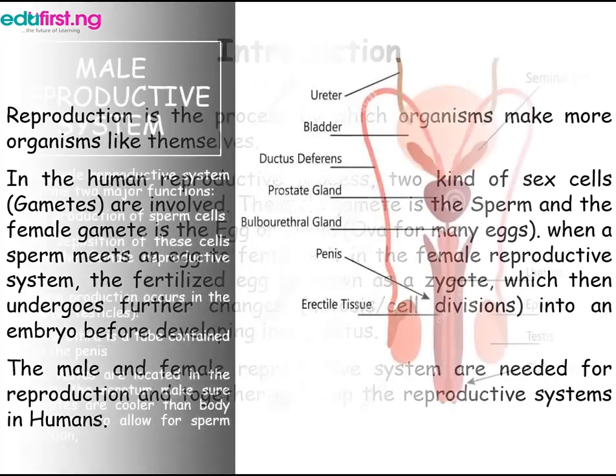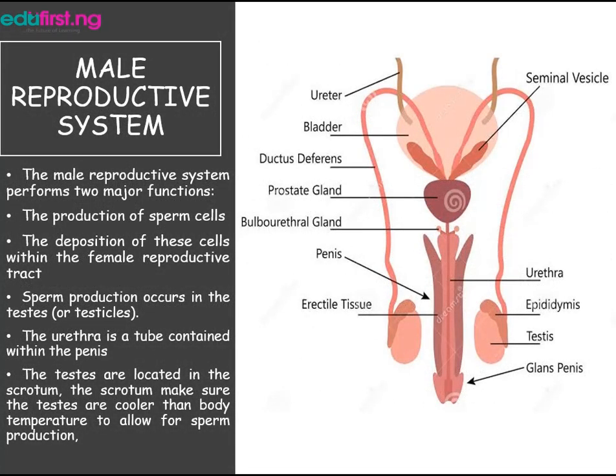The male reproductive system performs two major functions: the production of sperm cells and the deposition of these cells within the female reproductive tract. Sperm production occurs in the testis, or testicles. The testis are located in the scrotum, which keeps them cooler than body temperature to allow for sperm production.